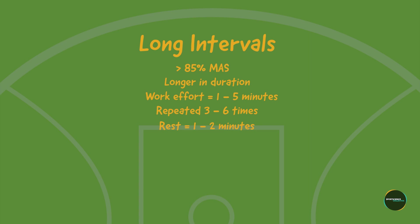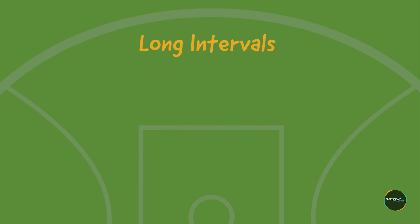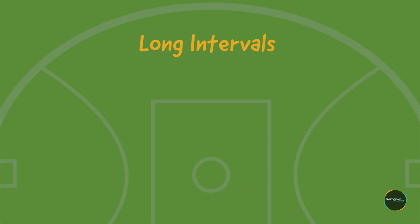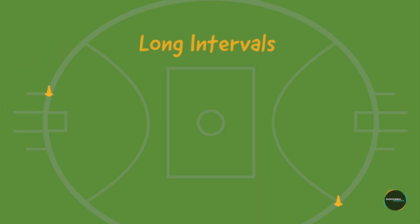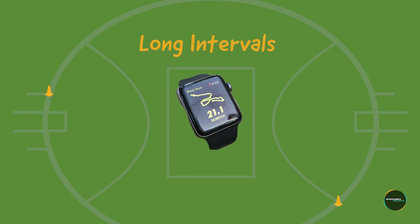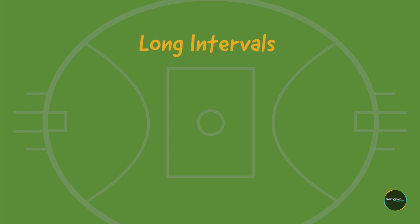Typically the longer the interval, the lower the running intensity, and vice versa. This type of running is best used early in preparation periods of training programs, as the underlying objective is to increase the volume of work an athlete can perform. Given the longer durations and distances covered, athletes can run around the boundary or use a watch to monitor distance. Long intervals are generally performed by athletes with low aerobic capacities, so we typically don't see elite athletes performing lots of long interval training sessions.